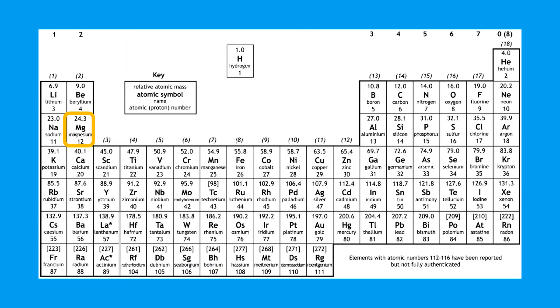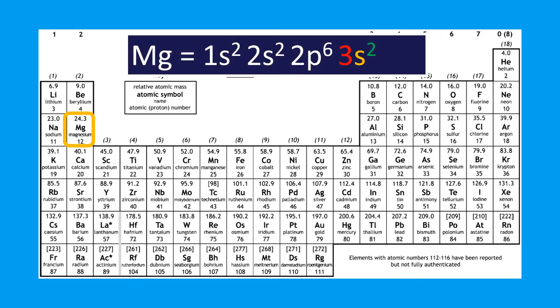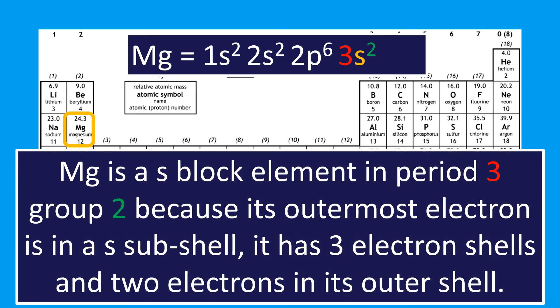Next — magnesium, electron configuration 1s² 2s² 2p⁶ 3s². It's an s block element because the outermost electrons are in an s subshell. It's period three because it has three shells — the outer shell is the third shell. And it's in group two because the third shell has two electrons in it, both in the s subshell.